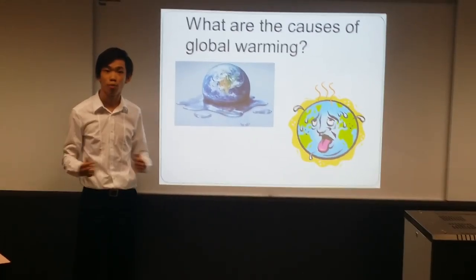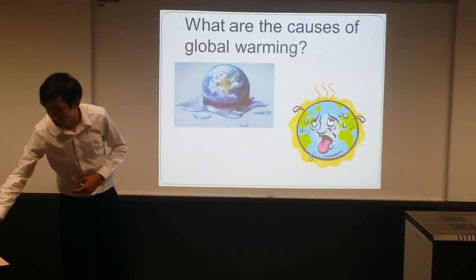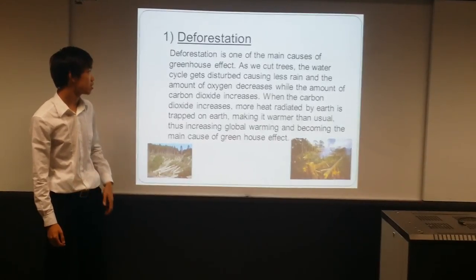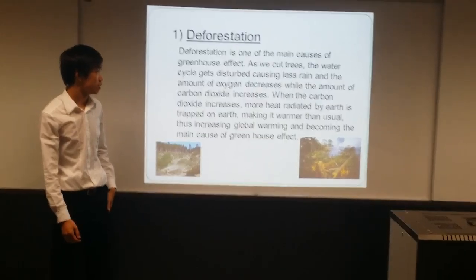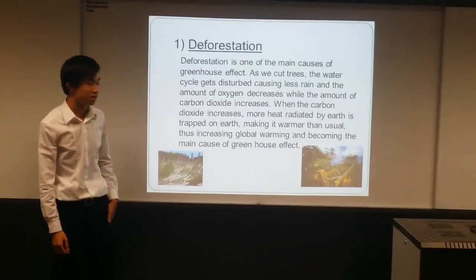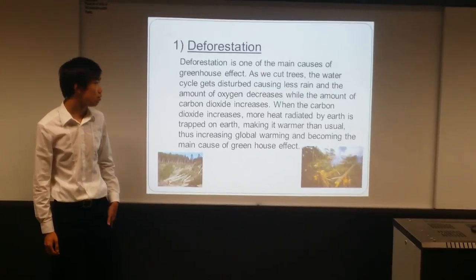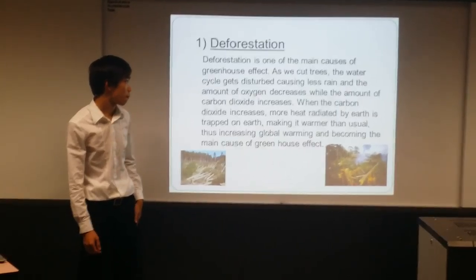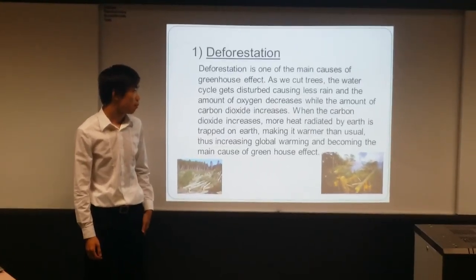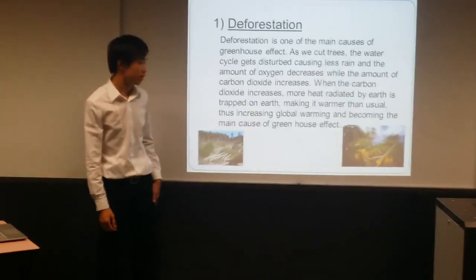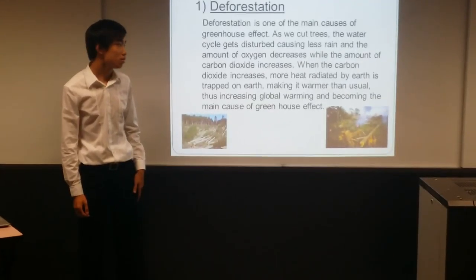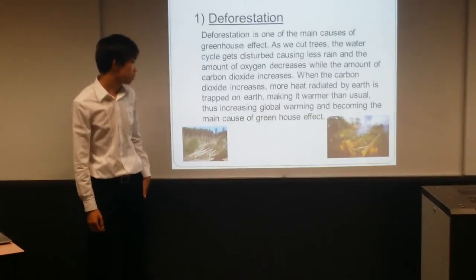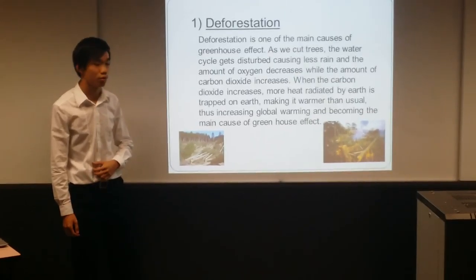What are the causes of global warming? The first factor is deforestation. Deforestation is one of the main causes of the greenhouse effect. As we cut trees, the water cycle gets disturbed, causing less rain, while the amount of oxygen decreases and the amount of carbon dioxide increases. When carbon dioxide increases, heat radiated by Earth is trapped, making it warmer than usual, thus increasing global warming.